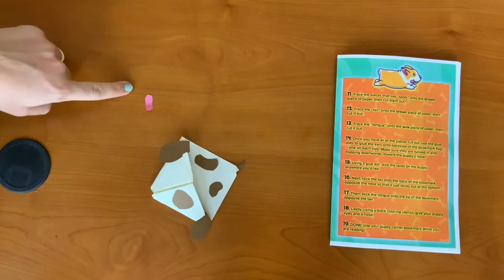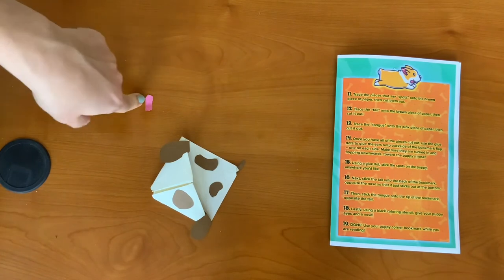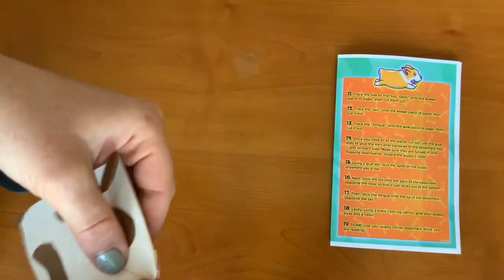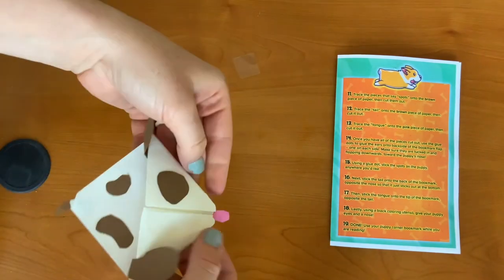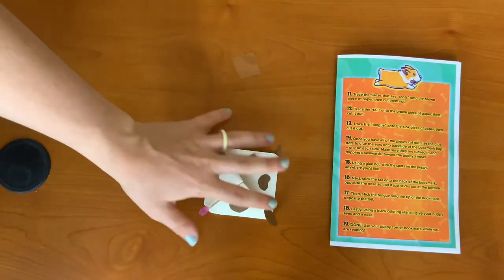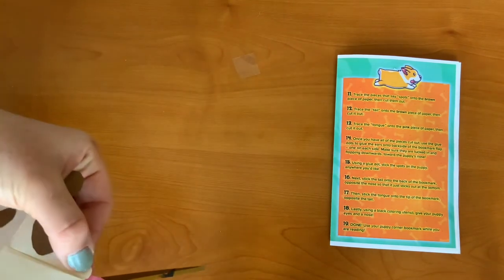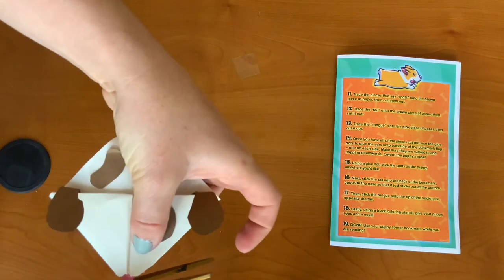Step 17, then stick the tongue onto the tip of the bookmark right here, opposite of the tail. You can actually trim it down if you have too much sticking out.